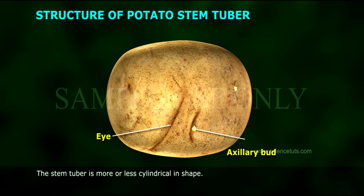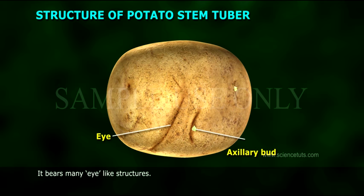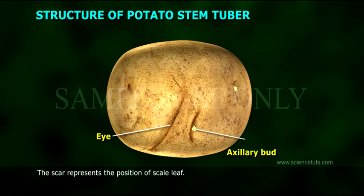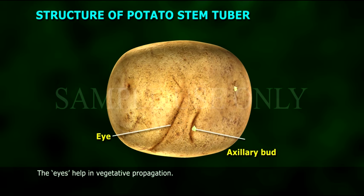The stem tuber is more or less cylindrical in shape and is covered by a brown coloured layer. It bears many eye-like structures. Each eye represents a node. Each eye possesses a semilunar leaf scar and an axillary bud in its axil. The scar represents the position of the scale leaf. The eyes help in vegetative propagation. Stem tubers do not possess adventitious roots.